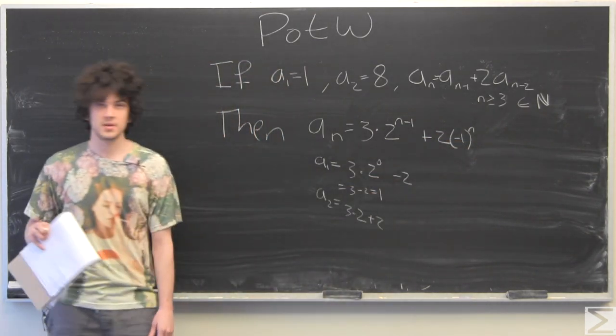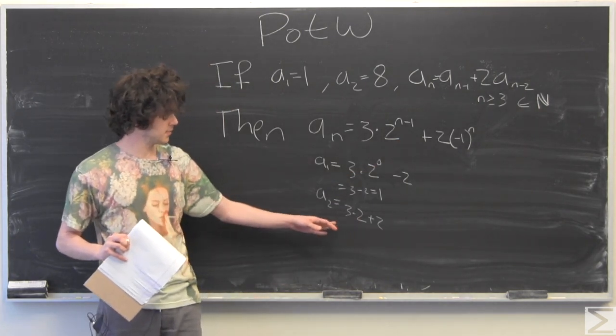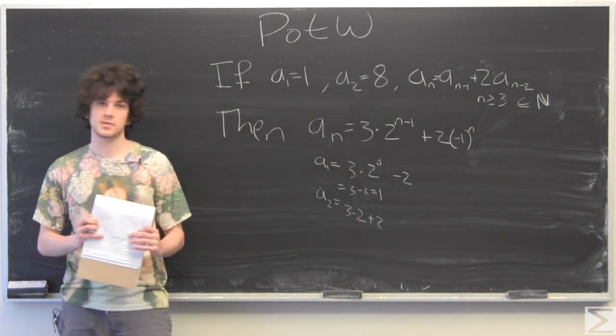And might as well prove it for n equals 2. And that n being even is going to make the negative 1 go away, and we just have 3 times 2 plus 2, which is 6 plus 2, which is equal to 8.